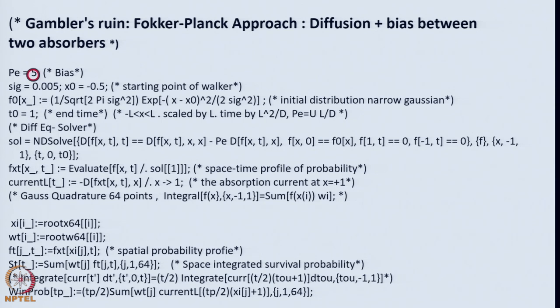You start with the peclet number, let us say 5. Instead of Dirac delta function, you take a very sharp Gaussian with very small sigma. The starting point is at minus half now, slightly towards the left. We want to see how he manages to reach right even though his position is unfavorable, but his bias is favorable because it is a positive bias. This is original distribution. X is dimensionless xi actually, time is tau, this is the domain minus 1 to 1 all scaled by l square by d and peclet is u l by d.